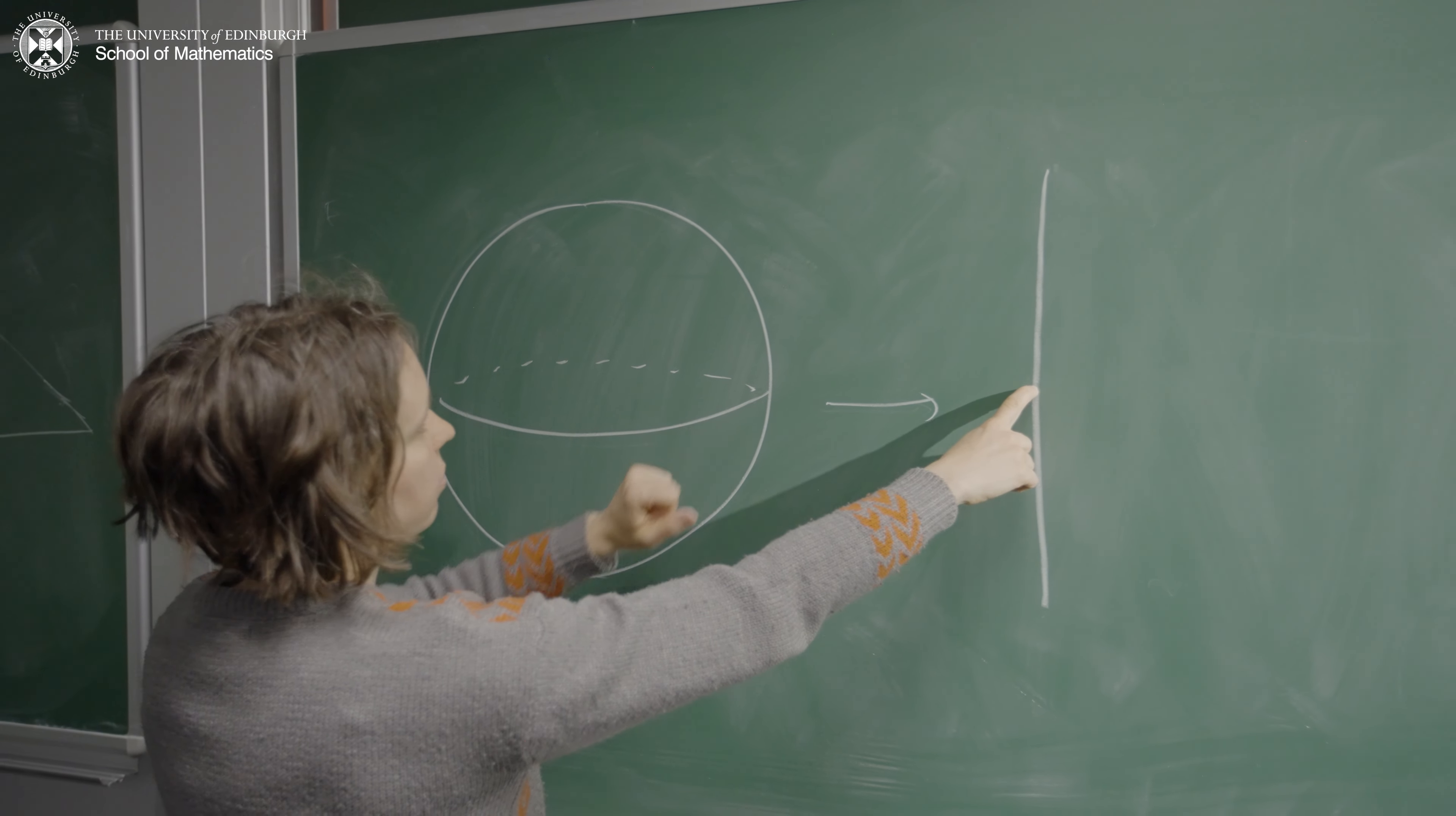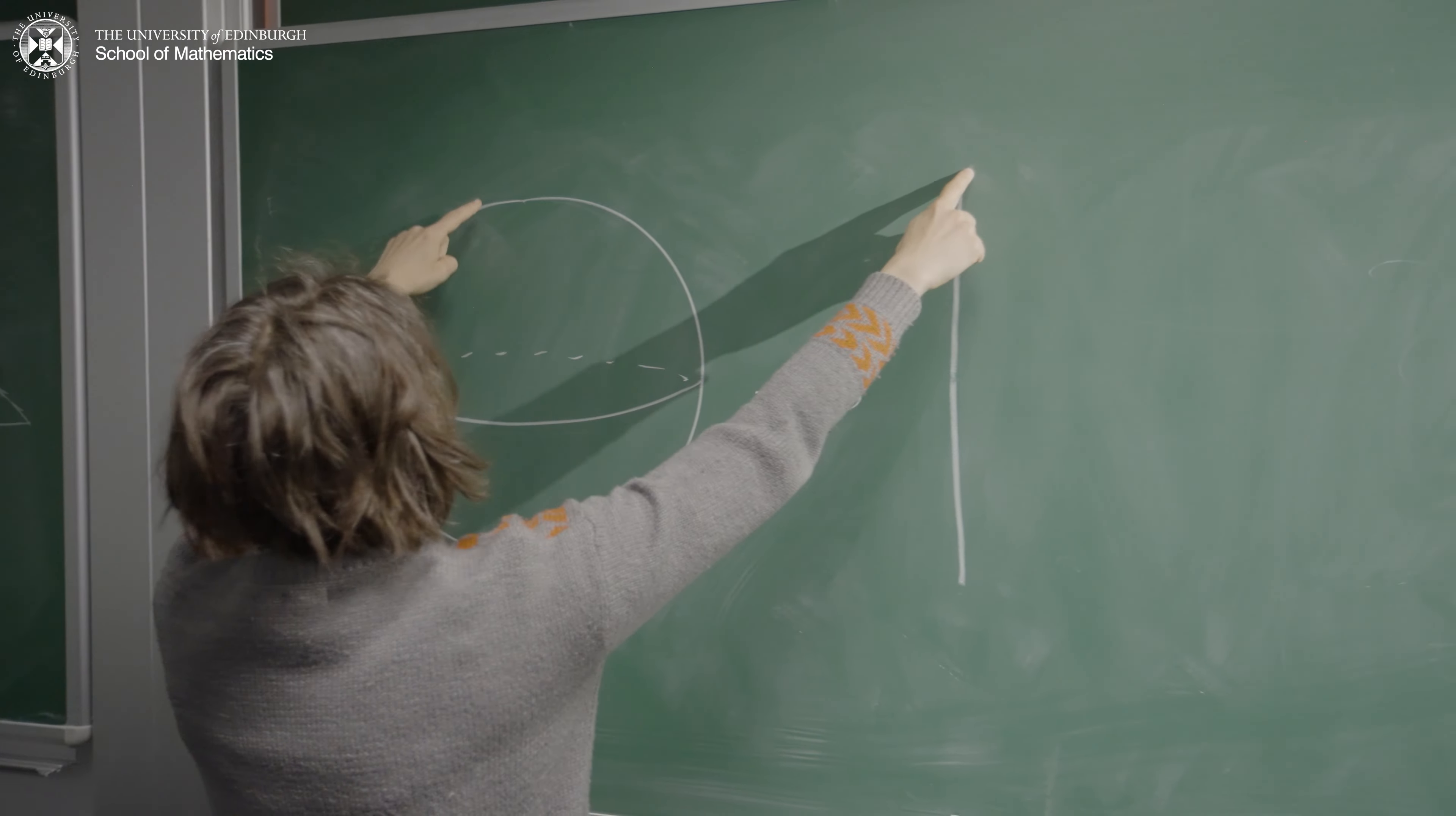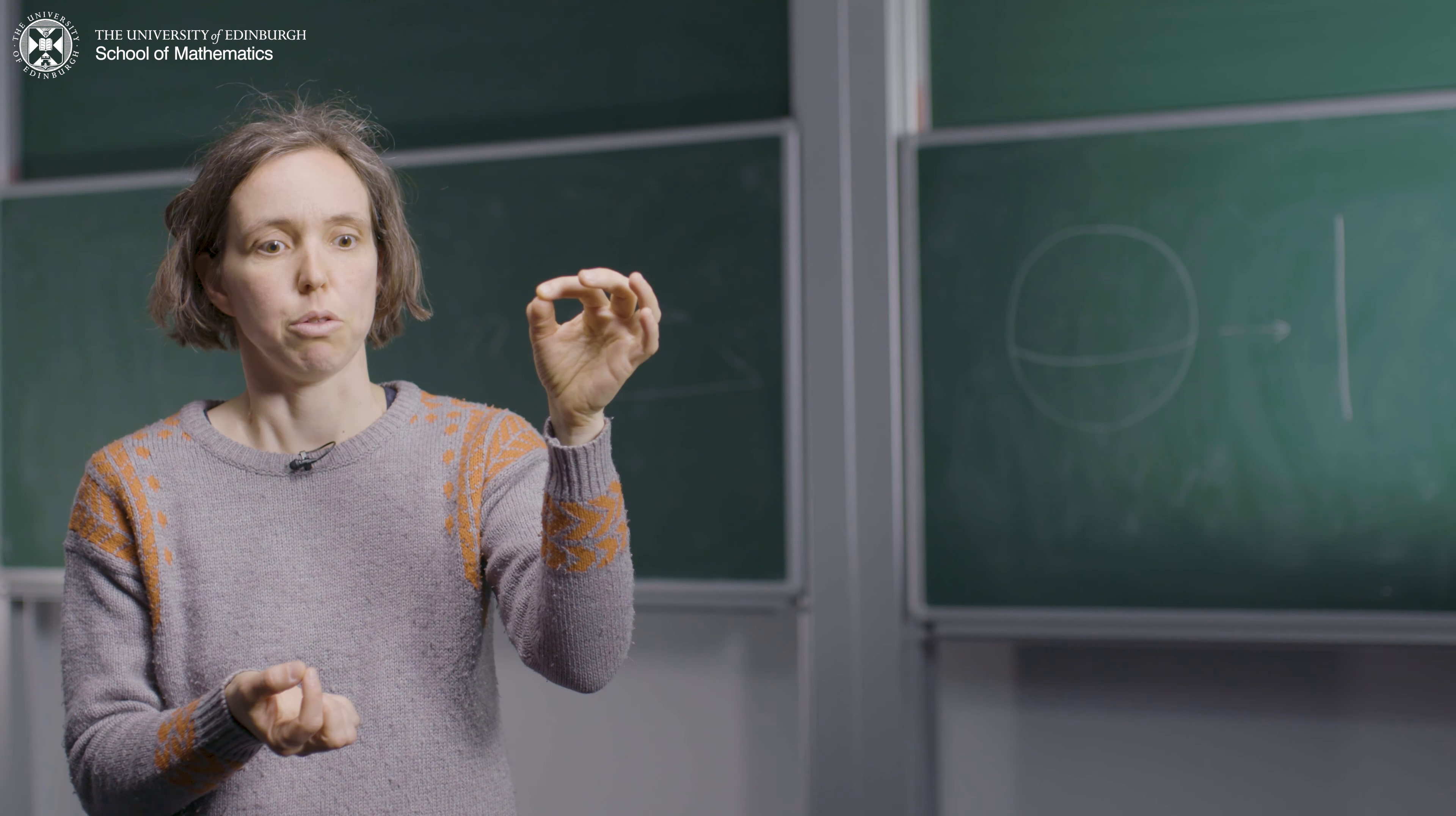And each point on this segment represents a circle of latitude, except the two endpoints, which represent the North and the South Pole.